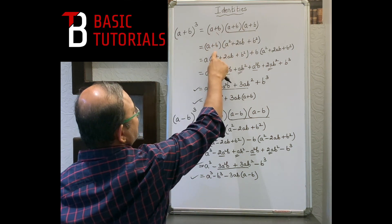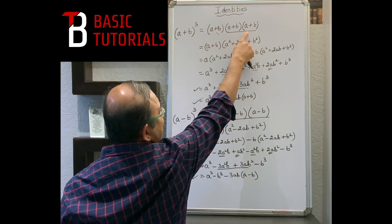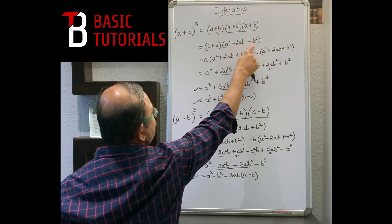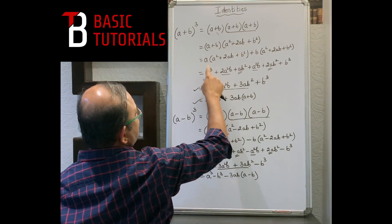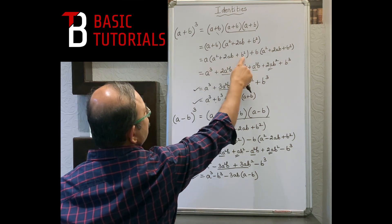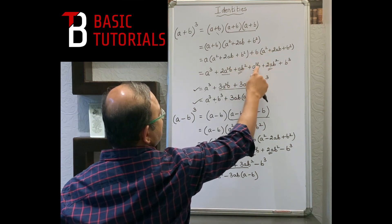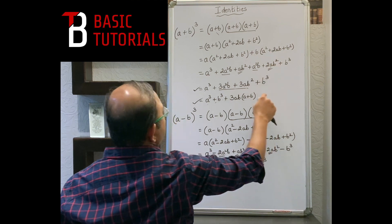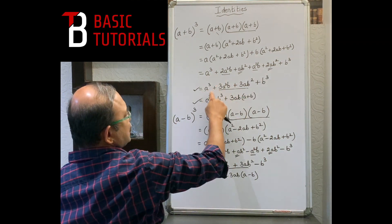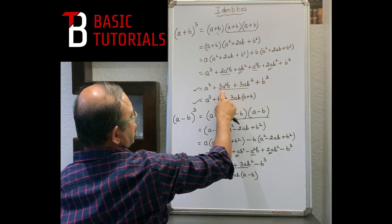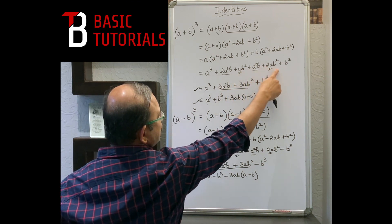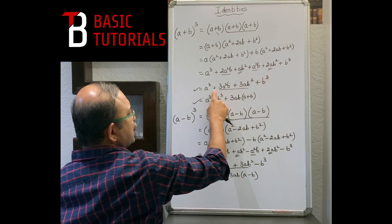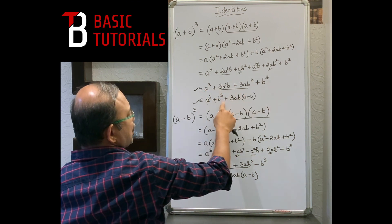Deriving (a+b)³: write it as (a+b)×(a+b)². Since (a+b)² = a² + 2ab + b², multiply by (a+b). We get: a³ + 2a²b + ab² + a²b + 2ab² + b³. Collecting like terms: a³ + 3a²b + 3ab² + b³. Taking 3ab common: a³ + b³ + 3ab(a+b).